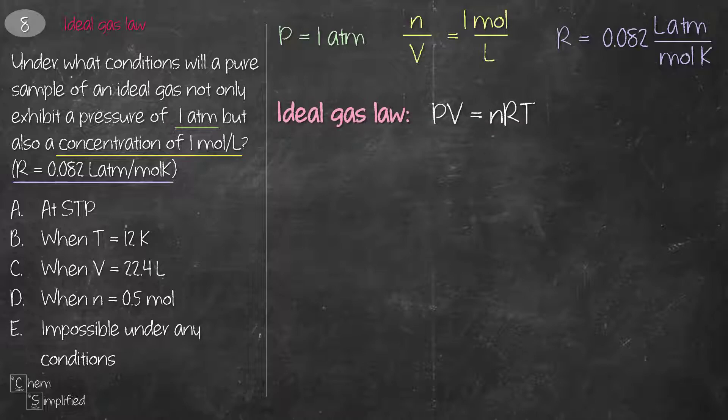We'll do a little bit of rearrangement so that we can get the V to the other side. We just divide both sides with V, and that gives us P equals n over V RT. Notice that we already have n over V, which is 1 mole per liter, and then we have pressure is 1 atm. So we plug in all this information, and then we can actually solve for T.